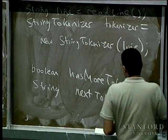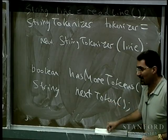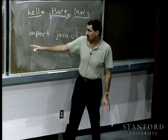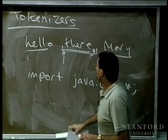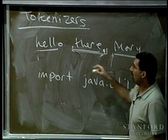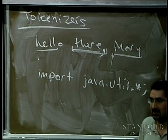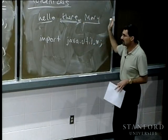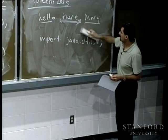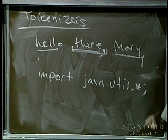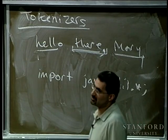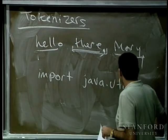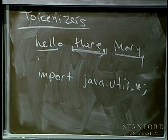If I started the tokenizer with 'Hello, there, Mary', I say do you have more tokens? Yes. Give me the nextToken — it returns 'Hello'. I ask again — yes. Give me nextToken — it returns 'there,' with the comma. Because the default tokenizer only delimits on spaces, tabs, or return characters. Then nextToken returns 'Mary'. Then hasMoreTokens returns false, and at that point you shouldn't call nextToken.